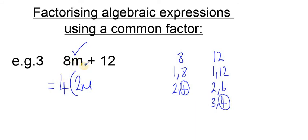4 times 2m, 8m. Plus, 4 times some number gives 12, 4 times 3. And again, if you've written out your factor lists, it's the numbers which are next to the factor pair. So we've used a 4, so that's why that's 2 and 3 here. Final answer, 4 bracket 2m plus 3, close the bracket.